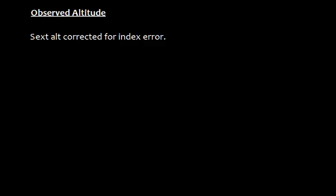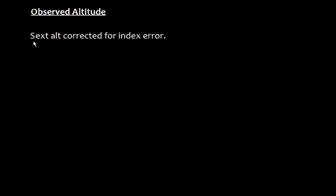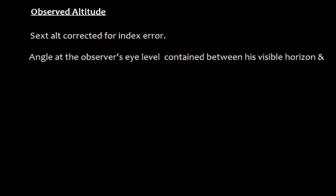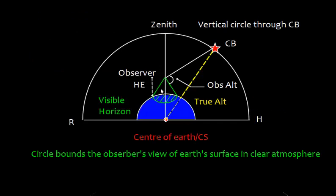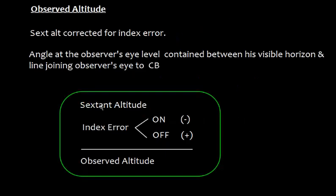Now let's talk about observed altitude. This is the sextant altitude corrected for index error, and it can be defined as the angle at the observer's eye level contained between the visible horizon and the line joining the observer's eye to a celestial body. We obtain observed altitude by applying index error to the sextant altitude. If the index error is on the arc, we subtract it; if it is off the arc, we add it to the sextant altitude.